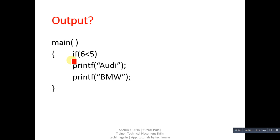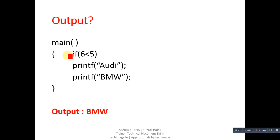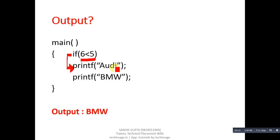The next code segment contains an if condition followed by two printf statements. The output will be BMW only. This if condition contains the condition 6 less than 5, which is false. We have not used curly braces here. The rule is: if we don't use curly braces, then only the single statement just after the if condition will be linked to it. The second printf is separated from the if. Since the condition is false, the first printf will not execute, but the second printf will always execute. If the condition were true, both Audi and BMW would be printed.